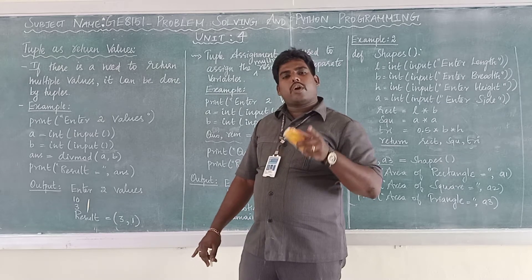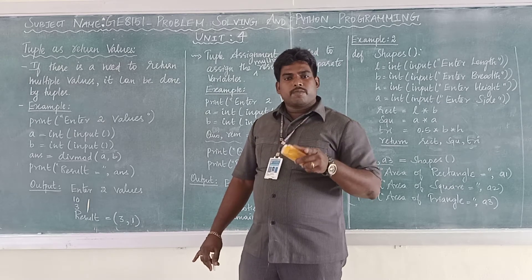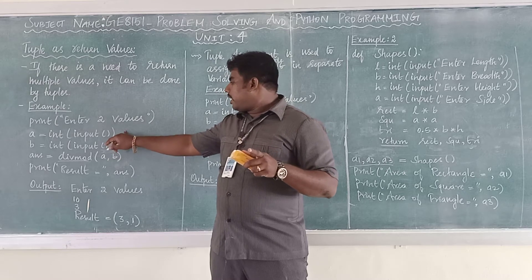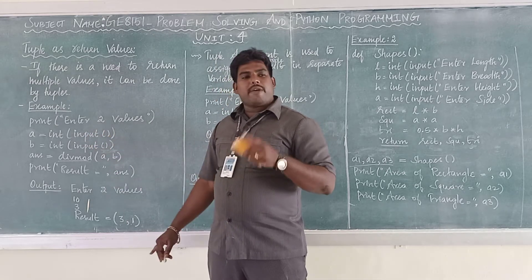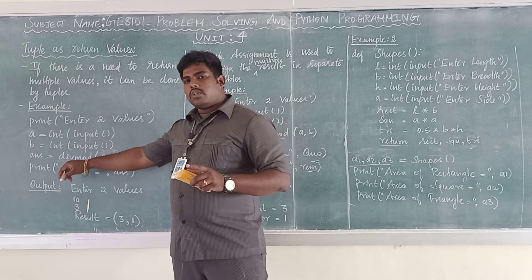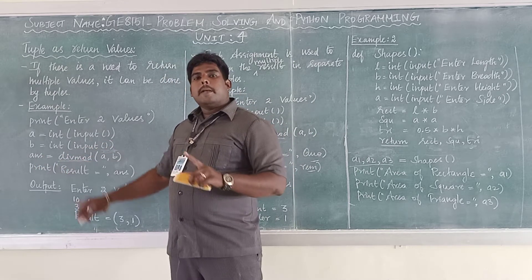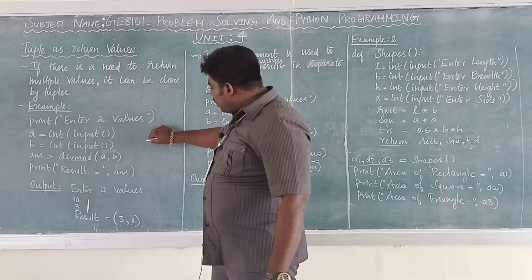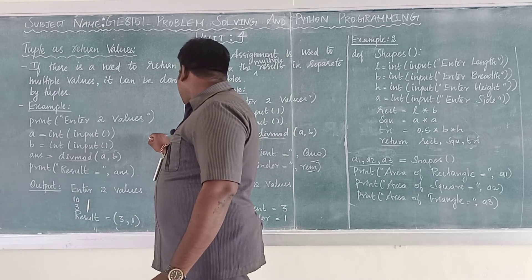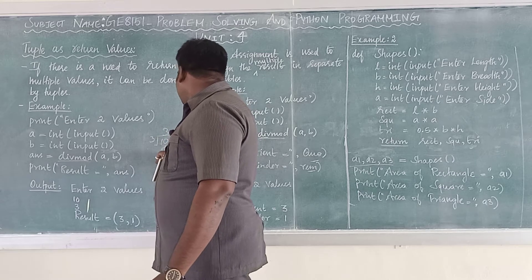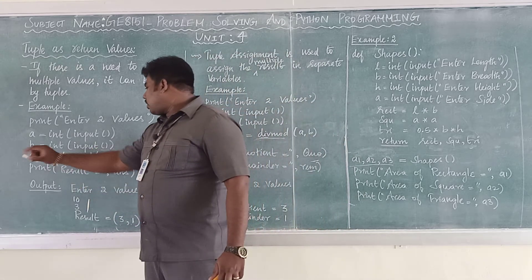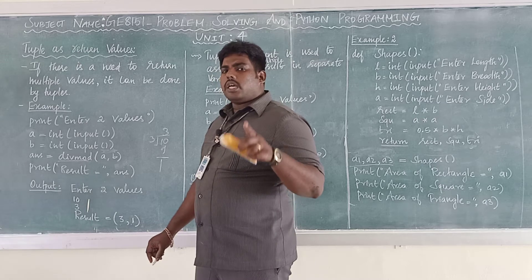How many inputs are required to perform division? Two inputs are required. So I am entering two values: A is an integer input, B is another integer input. For example, 10 and 3. Then, answer equals divmod — the predefined function used to perform division. So 10 divided by 3: 3 threes are 9 and the remainder is 1. Your quotient is 3 and the remainder is 1. So inside this answer, divmod gives two outputs — one is quotient, another one is remainder.